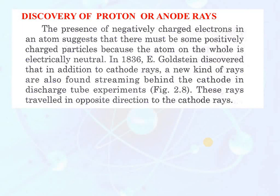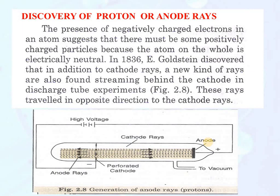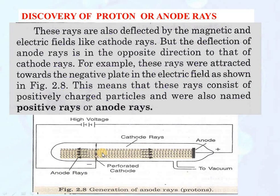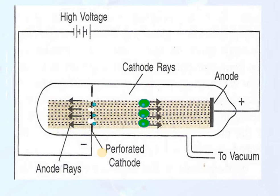In this case, the cathode is taken as perforated — that is, having holes in it — and the anode is taken as complete. These rays are also deflected by the magnetic and electric field like cathode rays, but the deflection of anode rays is in the opposite direction to that of cathode rays — they were attracted towards the negative plate in the electric field. This means that these rays consist of positively charged particles and were named as positive rays or anode rays. In the anode ray experiment, cathode rays coming from the cathode strike the gas molecules and eject electrons which are absorbed by the anode. The positive ions formed move towards the cathode, and because the cathode is perforated, most of these particles pass through and strike at the back of the cathode, forming anode rays.